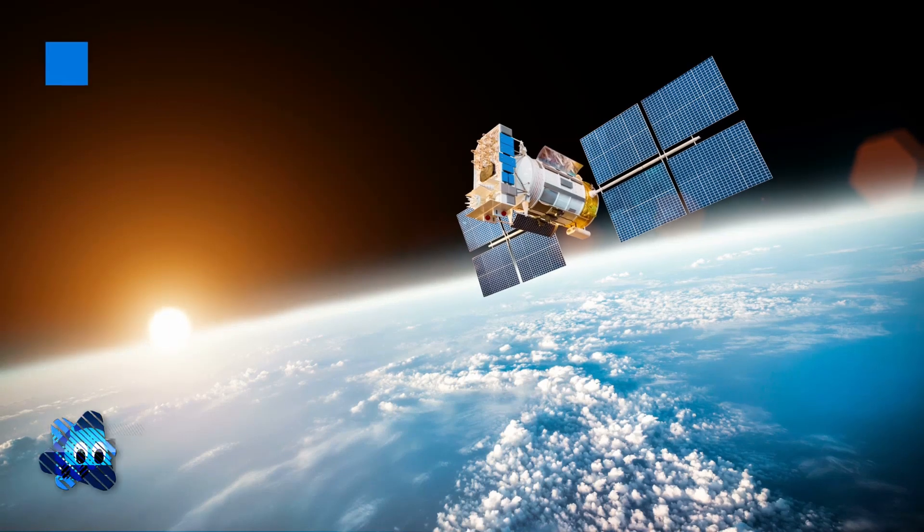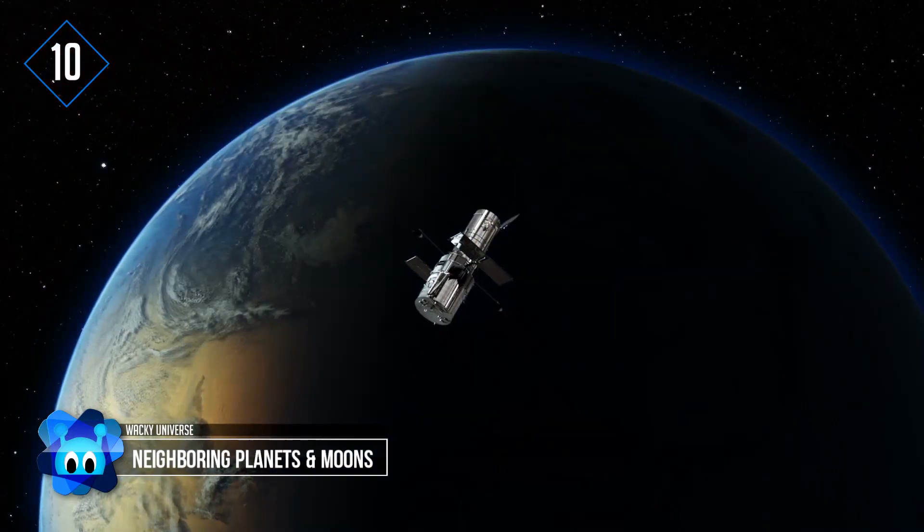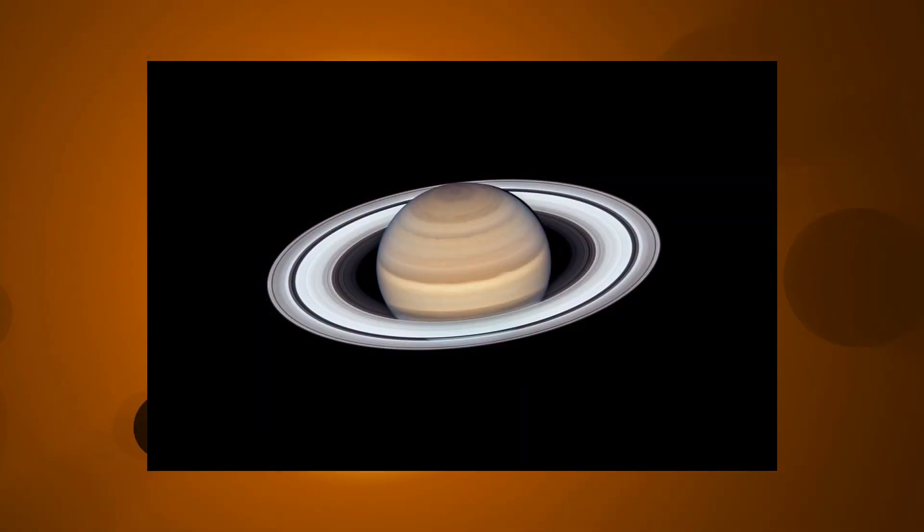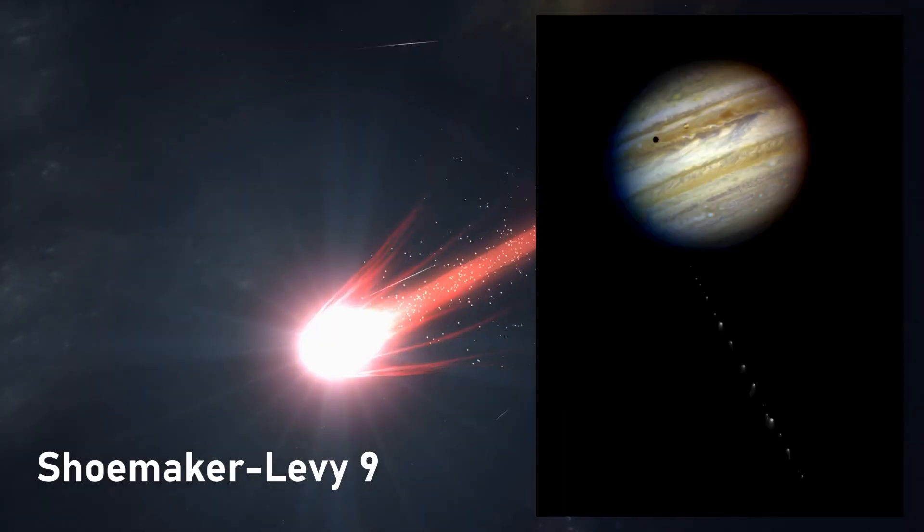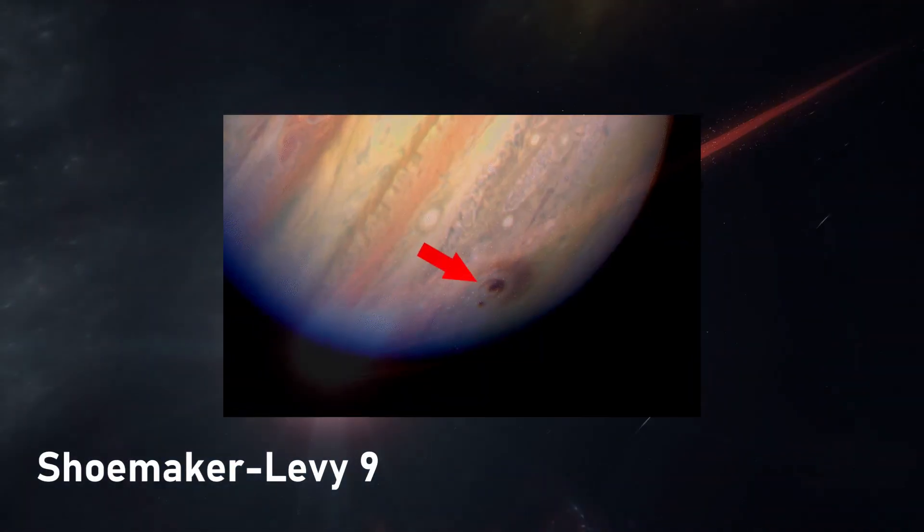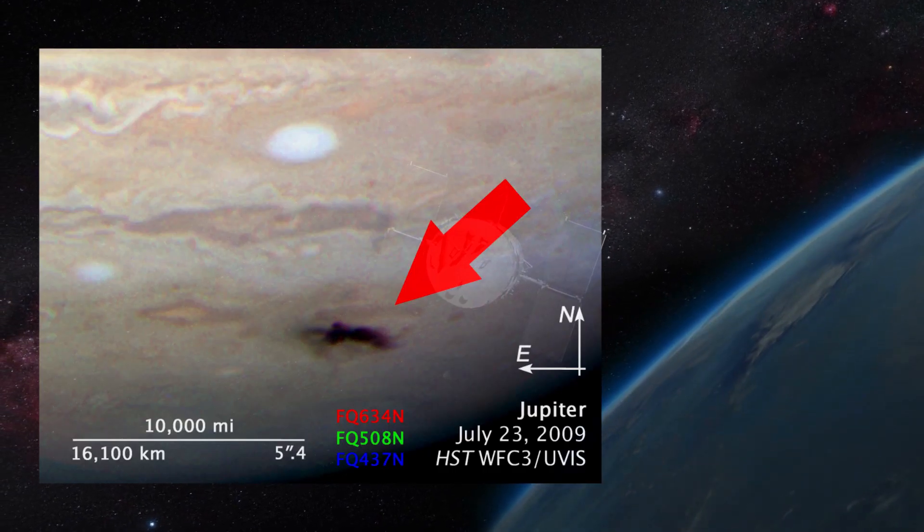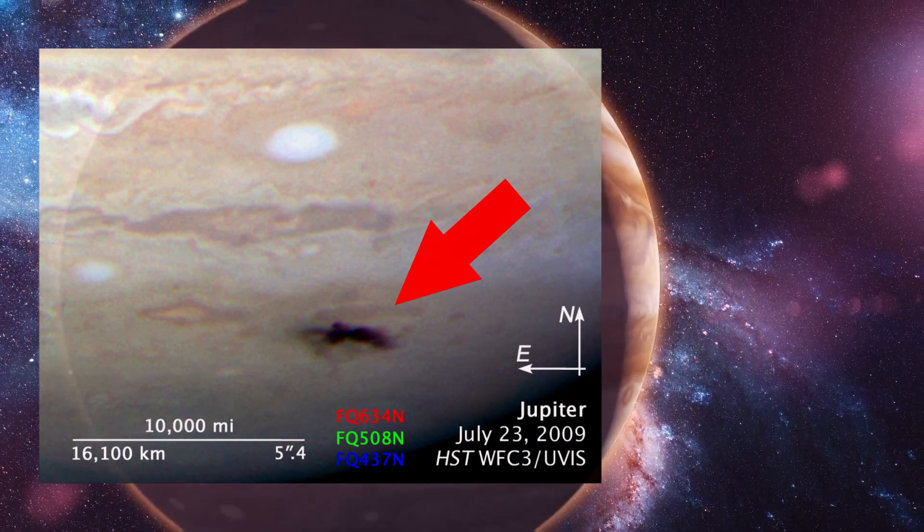In addition to studying the unknown objects of the universe, the Hubble Telescope has given us information about the known planets within our solar system. Back in 1994, the telescope saw 21 pieces of the Shoemaker-Levy 9 comet smash into Jupiter. In 2009, Hubble observed a Pacific Ocean-sized dark spot on the gas giant believed to be the result of another asteroid impact.